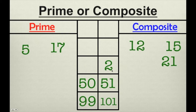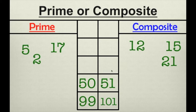How about 2? 2 is a prime number. A lot of students get confused between even and odd and think all even numbers have to be composite. That's not true. 2 is a prime number because it only has 2 factors, 1 and itself.